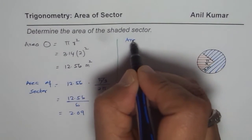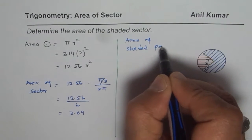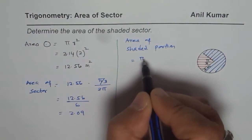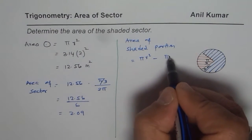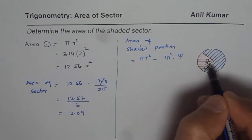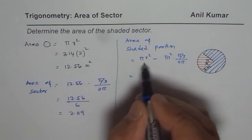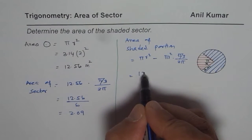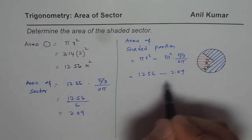So we say area of shaded portion. Now that is equal to area of circle which is pi r square minus area of the sector which is pi r square times ratios of those angles, which is in this case pi by 3 divided by 2 pi. We have already calculated these values. Area of the circle is 12.56. Take away area of the sector which is 2.09.